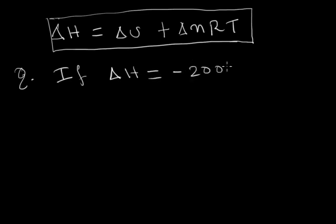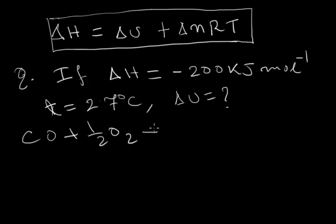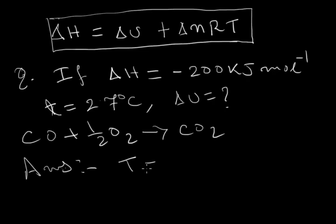Let us consider a problem. If delta H equals minus 200 kJ per mol, temperature is 27 degrees Celsius, find delta U for the reaction CO plus half O2. Now the temperature is in Celsius scale, so we convert it into Kelvin: 27 plus 273 equals 300 Kelvin.